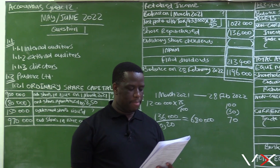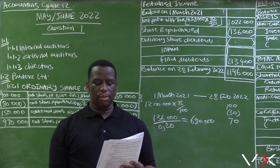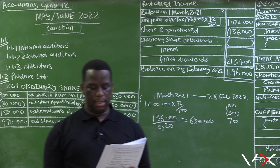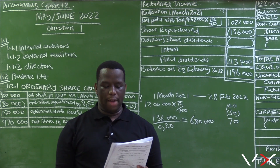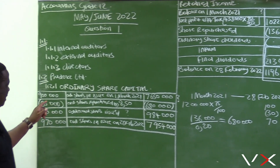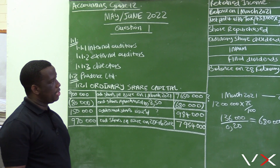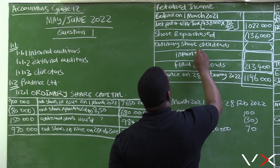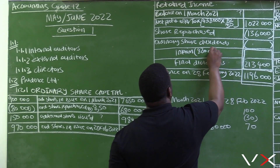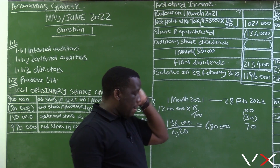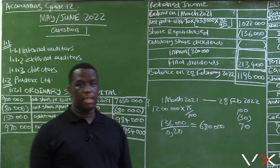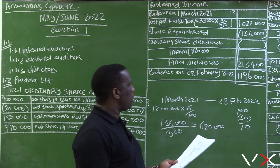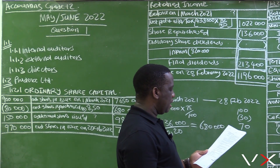Still on page 5, information B — the third transaction on the 31st of August 2021 — an interim dividend of 28 cents per share was paid. Remember, on 30 August 2021, 80,000 shares were repurchased from a retired shareholder who would no longer qualify for dividends. The shares at the beginning of the year were 900,000, minus the 80,000 repurchased, giving 820,000 shares for the interim dividend calculation.